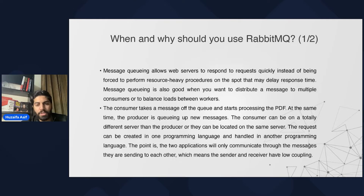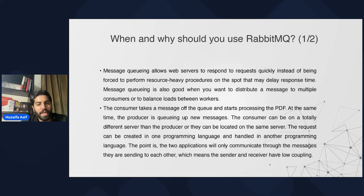Producers keep sending requests for generating new PDFs. If the consumer — the service that creates the PDF — is currently down and we do not have a queue, the end user would get an error like 'sorry, come again later.' With a queue, the user sees 'thank you, the process is done,' and the data is entered into the queue. When the other application is back up and running, it reads the data from the queue. When the process is done and the PDF is created, it dequeues the data by calling an acknowledge method, which we will discuss later in the coding section.